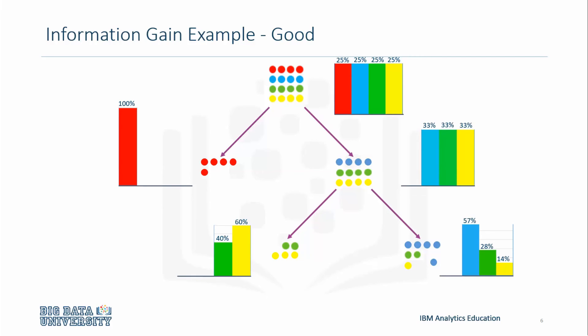In the second split, there is less information gain than the first split. We can see that there is a lot more entropy in the datasets here than here, since there is more randomness in the datasets.